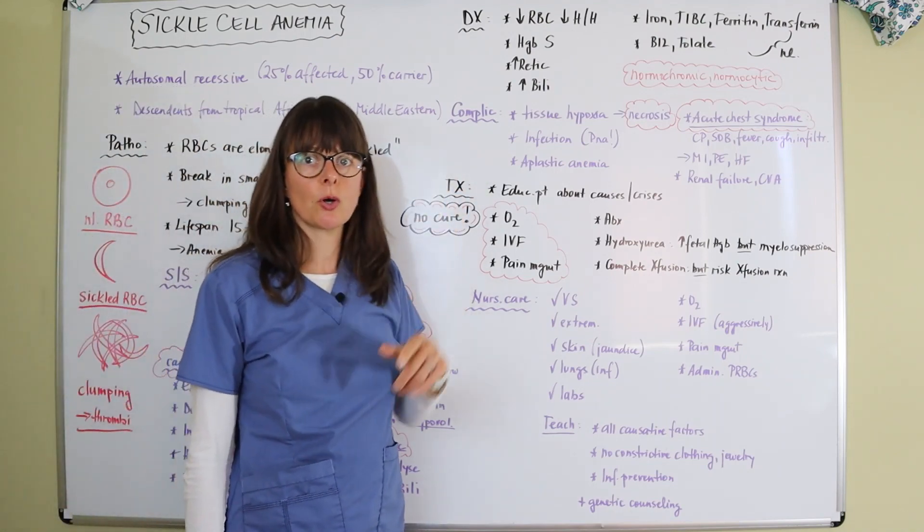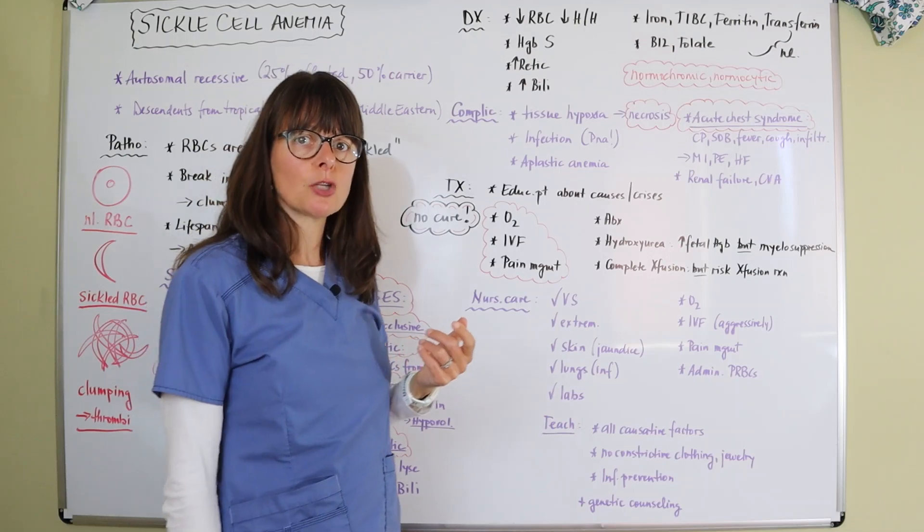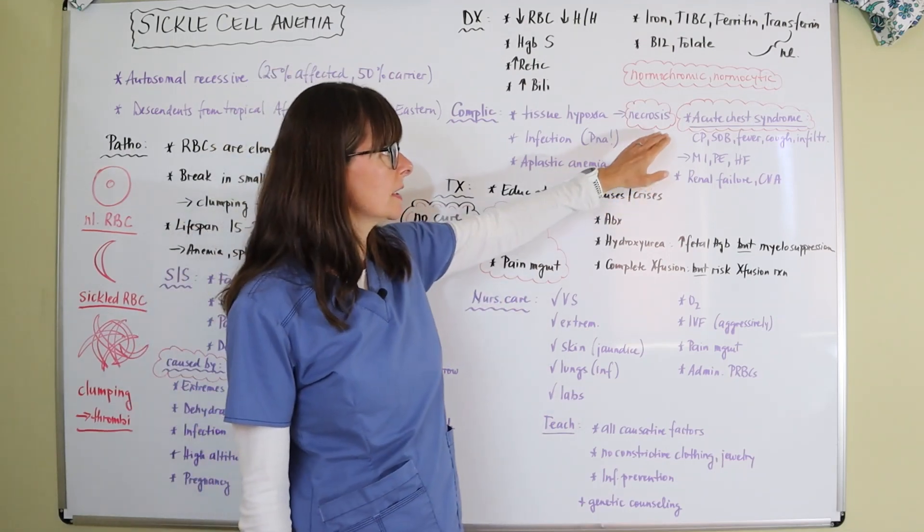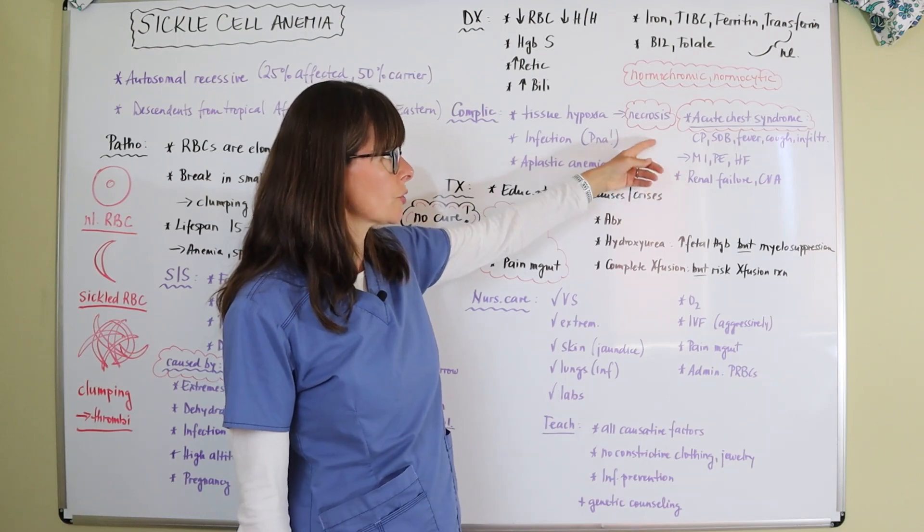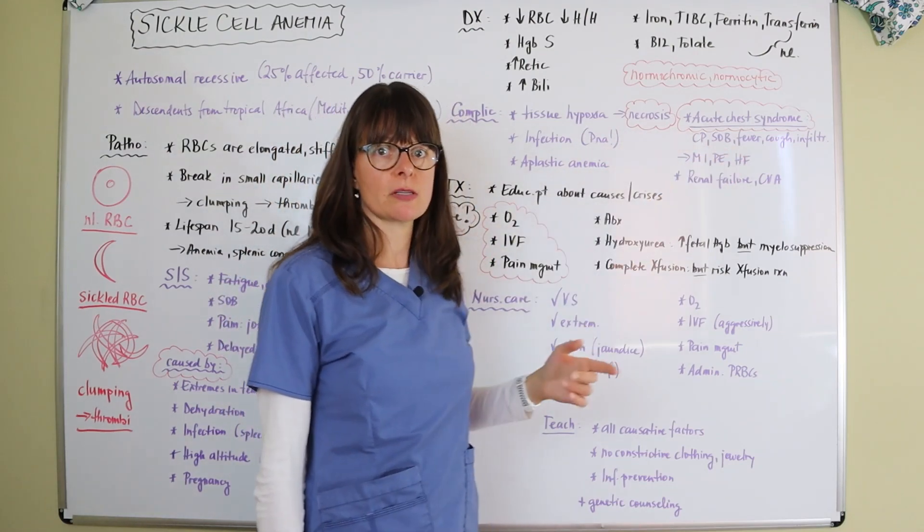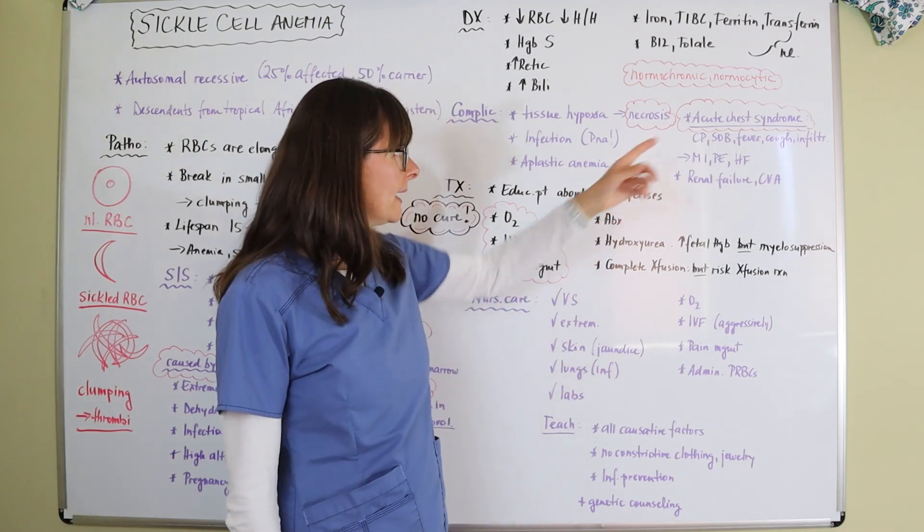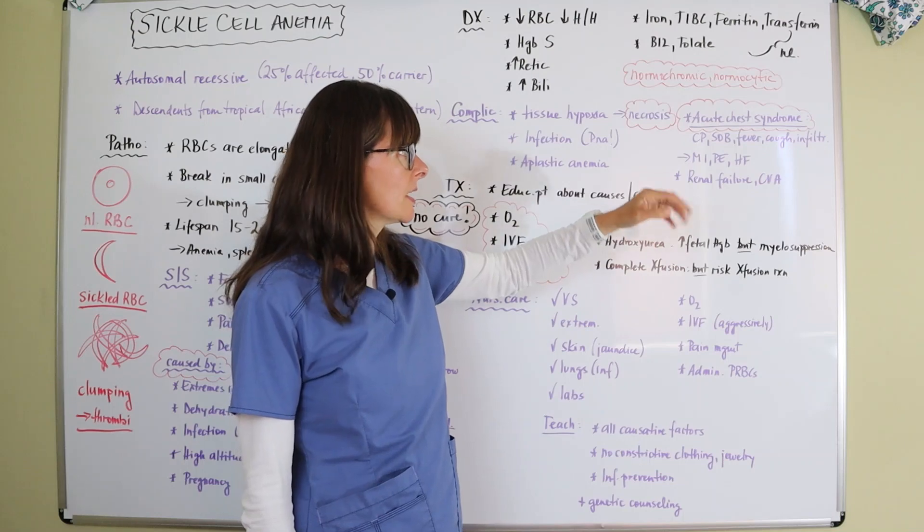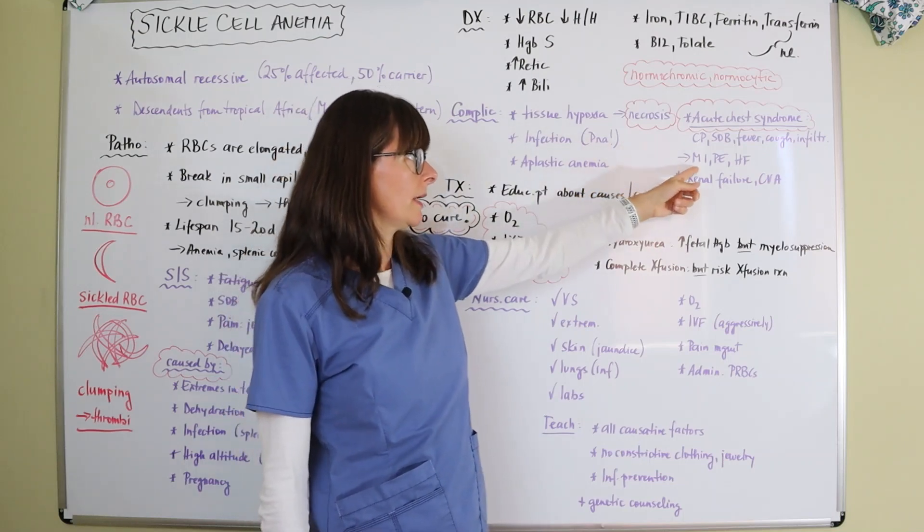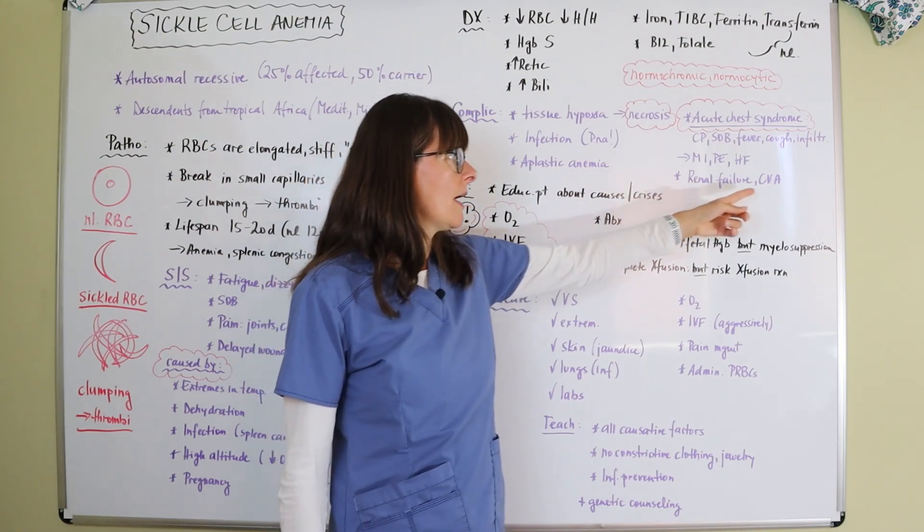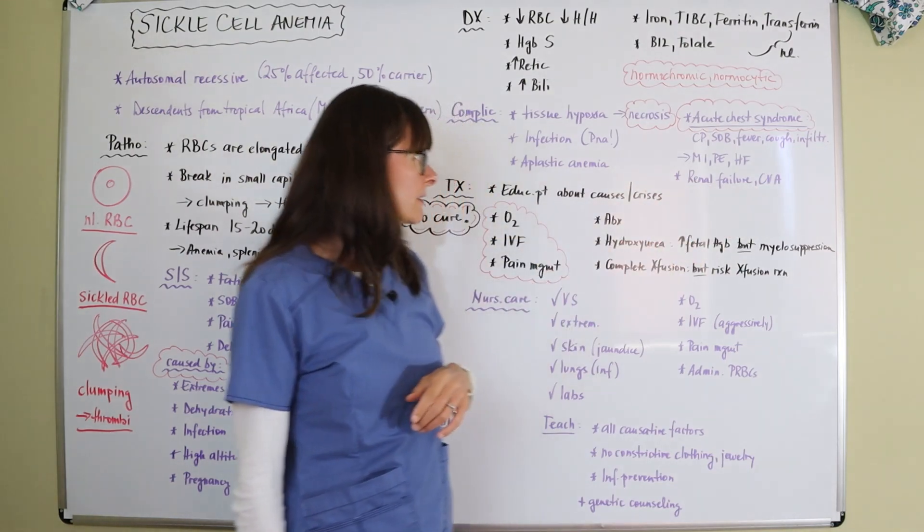And then there's a special term that pertains to sickle cell anemia, which is acute chest syndrome. The patient will present with chest pain, shortness of breath, fever, cough, and infiltrates on a chest x-ray. And that again is because of this tissue hypoxia and necrosis. But the cause could be anything like an MI, a PE or heart failure, or the patient could even go to renal failure and have a stroke.